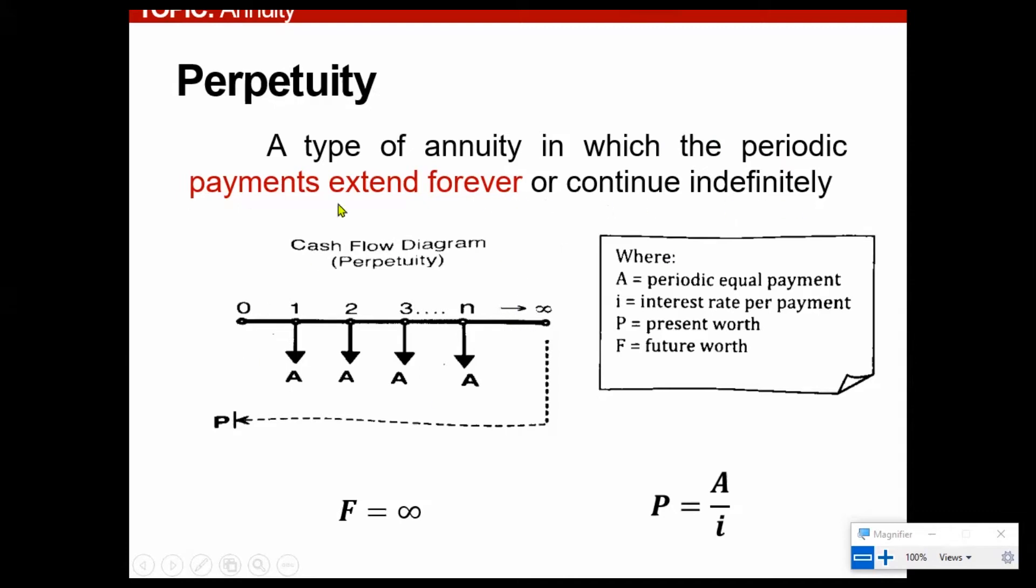So here is the cash flow diagram. You can see same as on the first parts, ordinary, although it is continuous at an indefinite time. So as we have said, examples have been set to this, perpetuity.